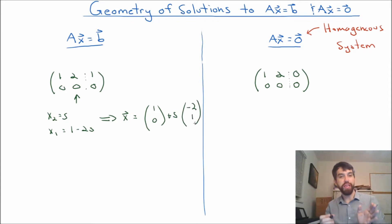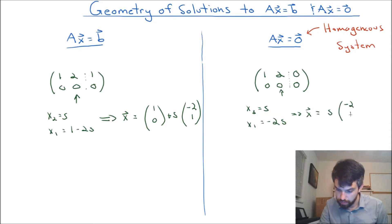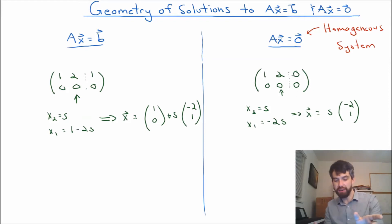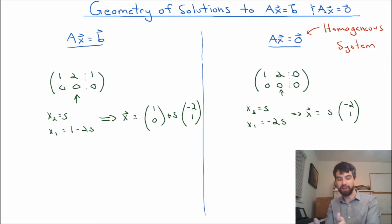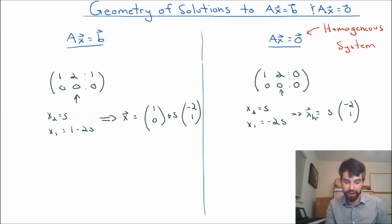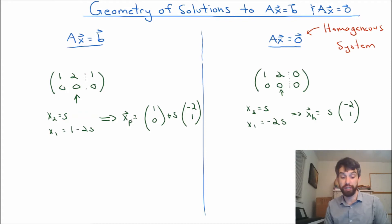I'm going to do the exact same thing, which will only be slightly different in the homogeneous situation. Note that the only thing that changes is that the constants all being zero — the b being all zero — means that in your vector x, it's just all a parameter times one vector. There's no constant vector in your solutions to the homogeneous system. I'm going to write x sub h for homogeneous and x sub p for particular, and I'll delay telling you why for just a little bit.